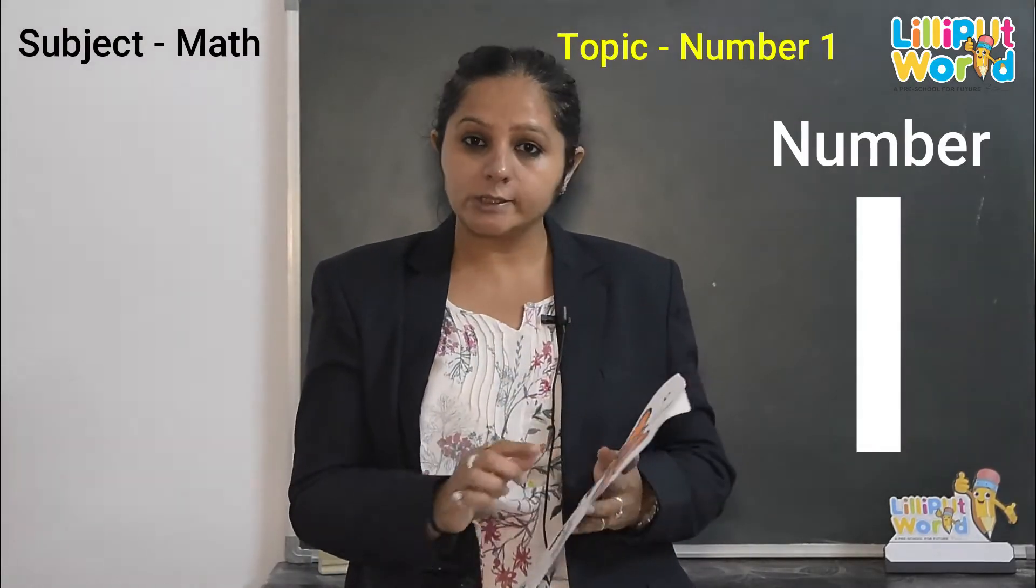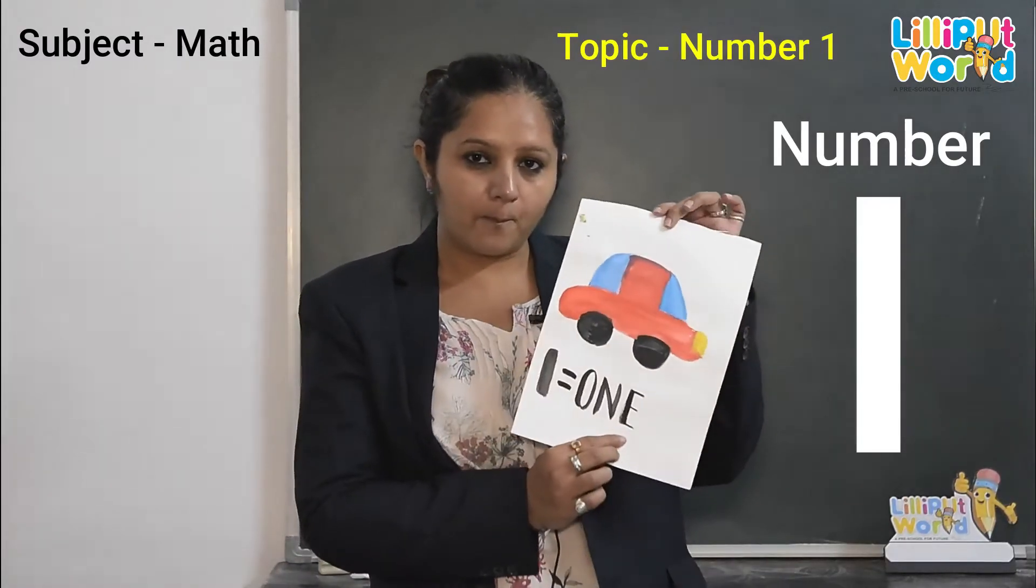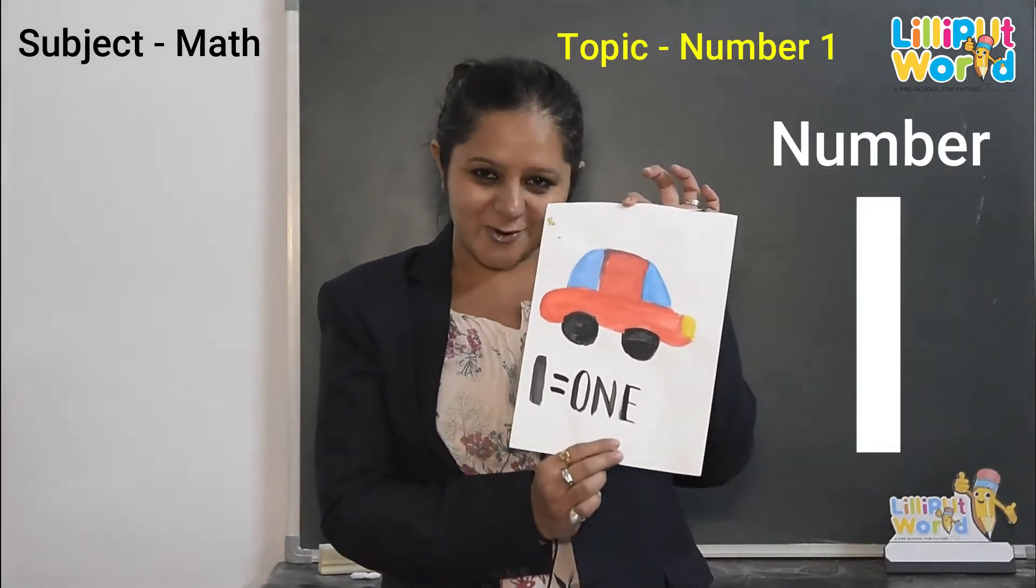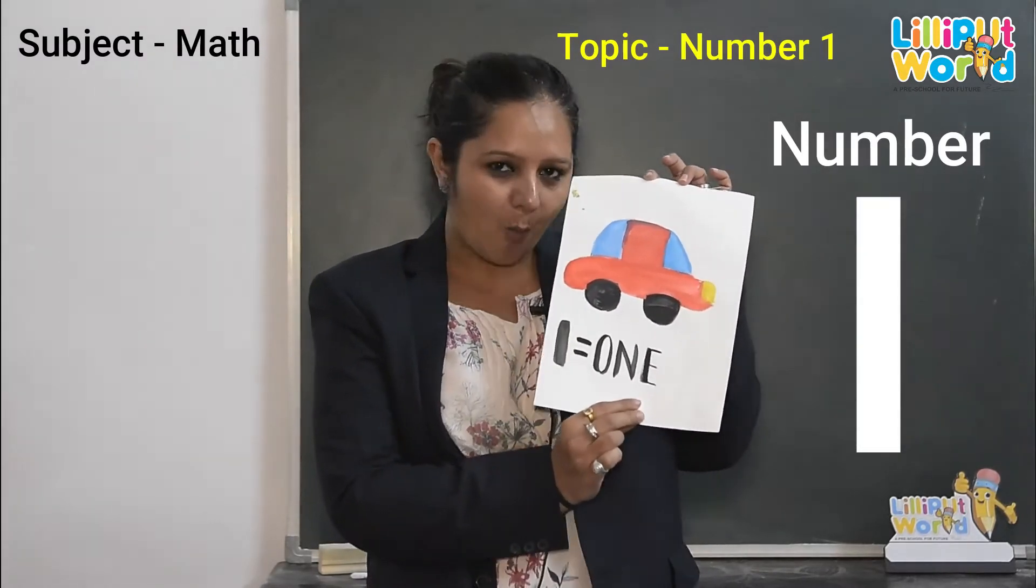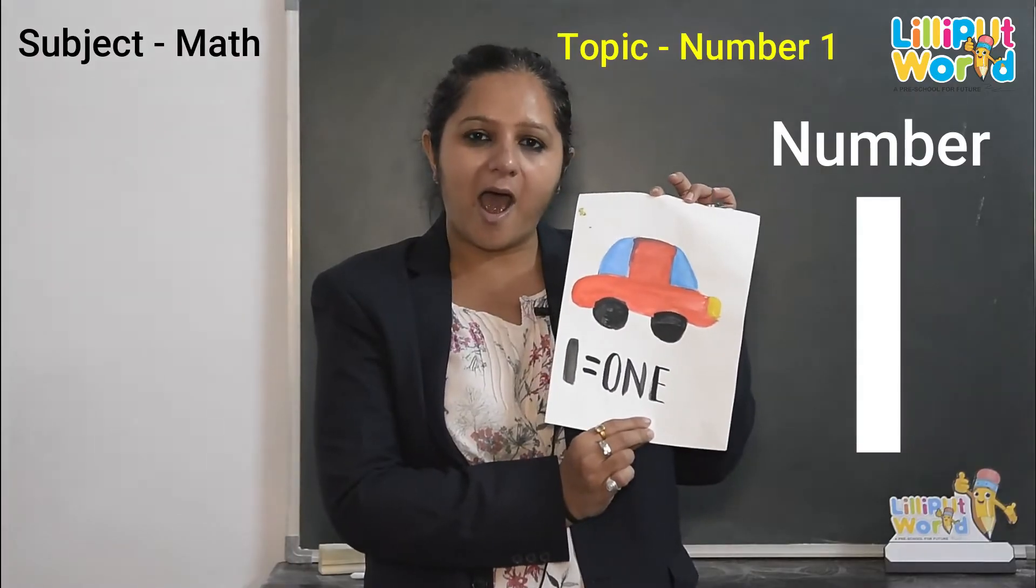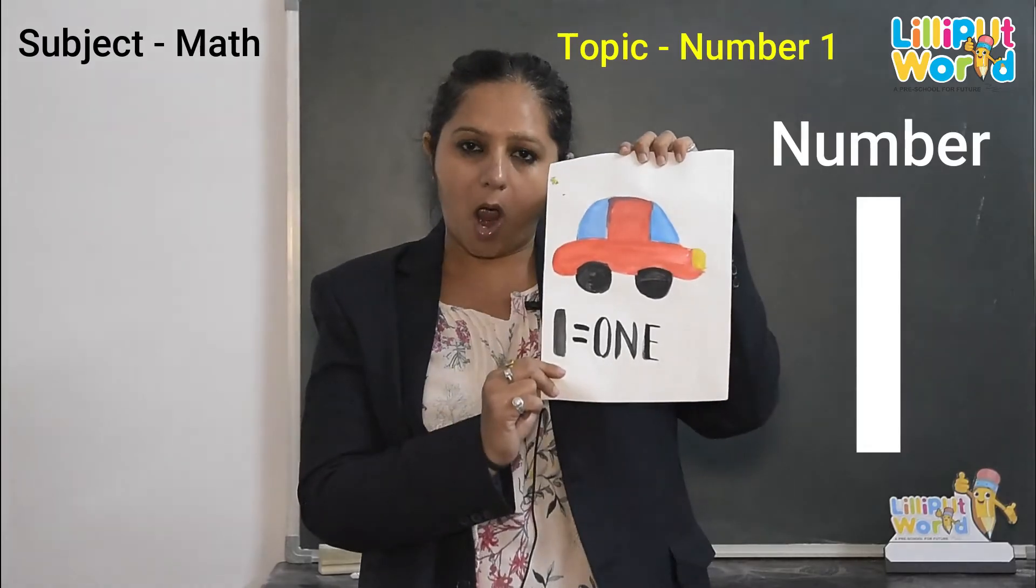Now do you know who is coming? What's coming? Broom, broom, broom. This is car. What is this? Car. How many car? 1 car. How many? 1. So 1 car.